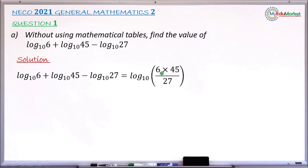Inside the bracket would now be 6 multiplied by 45. This is a result of adding log 6 and log 45, which the law says you now multiply 6 by 45, and divide it by 27. And this division by 27 is from the law which says if you are subtracting the log, you now divide by the number. So you now have log to base 10 of 6 multiplied by 45 divided by 27.